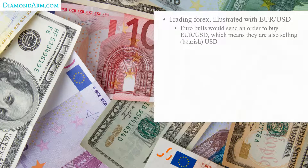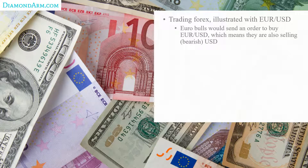Trading forex illustrated with the same pair: if you are bullish on the euro, you would send an order to buy euro slash US dollar, which means you are also selling — being bearish — US dollar. The big benefit with forex is that it is much easier to be short. If you are going to short stocks, it's more of a big deal: on most platforms you have to pay interest, which can be high. It can be difficult to short stocks, and you also have to pay dividends. In the forex market, it is very easy — you can be a bull or a bear.